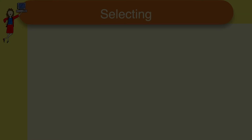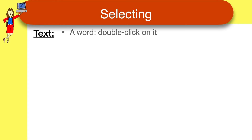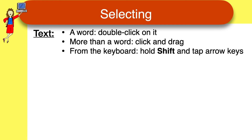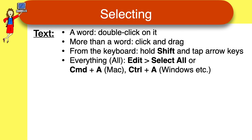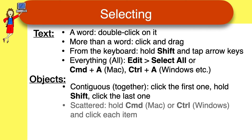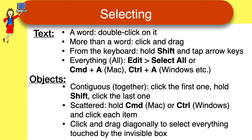Okay, I just threw a lot of information at you in a short time, so as promised, here's a quick recap. For selecting text: double-click to select a word; if it's more than a word, click and drag; from the keyboard, hold the Shift key and use arrow keys to select. To select everything, click Select All on the Edit menu, or Command-A on a Mac, or Control-A on Windows and everything else. If you're selecting objects and they are all together in a row or column, click the first one, hold the Shift key, and click the last one. If they're scattered, hold the Command key on a Mac or the Control key on anything else and click each individual item. Or click and drag diagonally to select everything touched by the invisible box you're drawing.